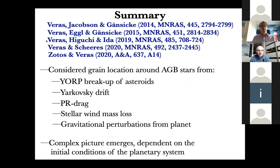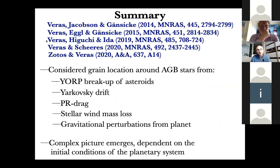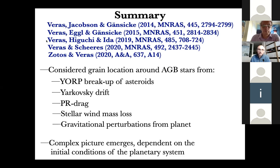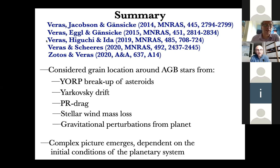In conclusion, my collaborators and I have considered a variety of different effects which help determine the grain size distribution and location around AGB stars. The initial conditions of the planetary system are crucial — not only its existing dust distribution, but also the concentrations of its asteroids and their properties, and whether a planet survives to the AGB phase. The star's mass and luminosity evolution throughout the giant branch phases then determines the subsequent evolution: how asteroids break up, how the dust drifts, and how the planet and dust are pushed outward by stellar mass loss. The planet's gravity on the dust leads to a complex picture of what types of grain orbits are allowed and when. Thanks for your attention, and I'm happy to take any questions.